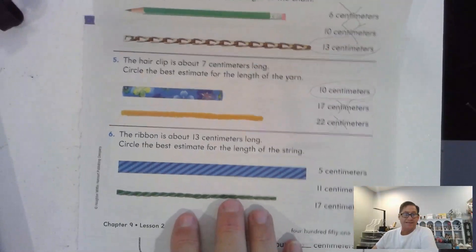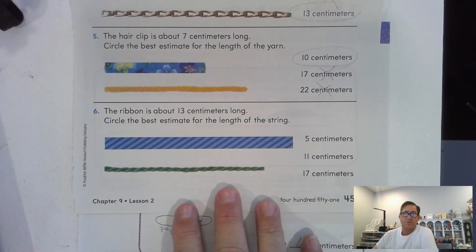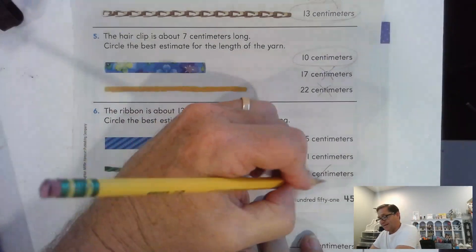Okay, number 6. The ribbon is about 13 centimeters long. Circle the best estimate for the length of the string. So we're looking for a number shorter than 13. Okay, so it's not 17.